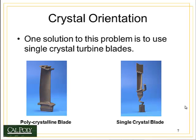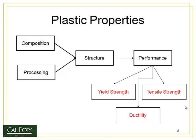And these are what we call the plastic properties. The plastic properties are all measured as a function of performance, and there are three primary plastic properties that we're concerned with: first the yield strength, then the tensile strength, and finally we'll talk about ductility.